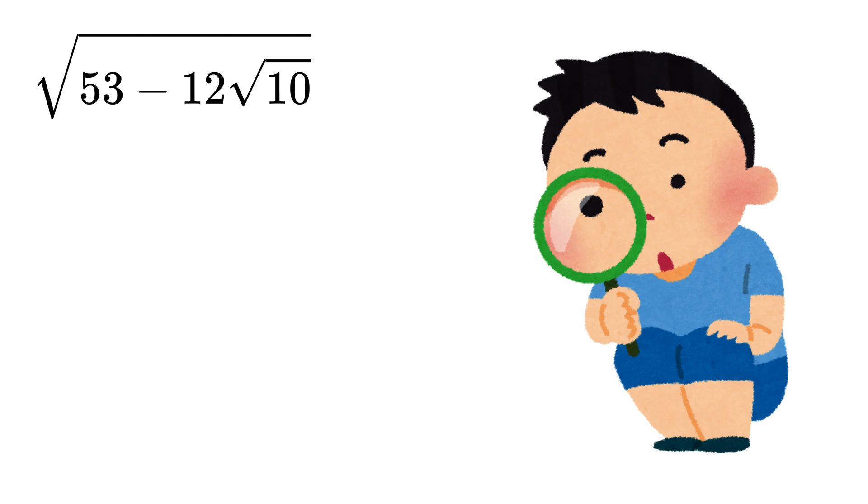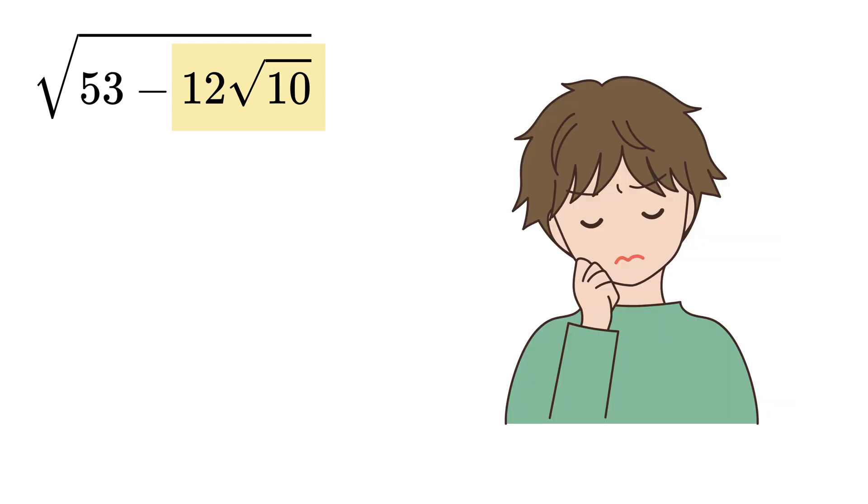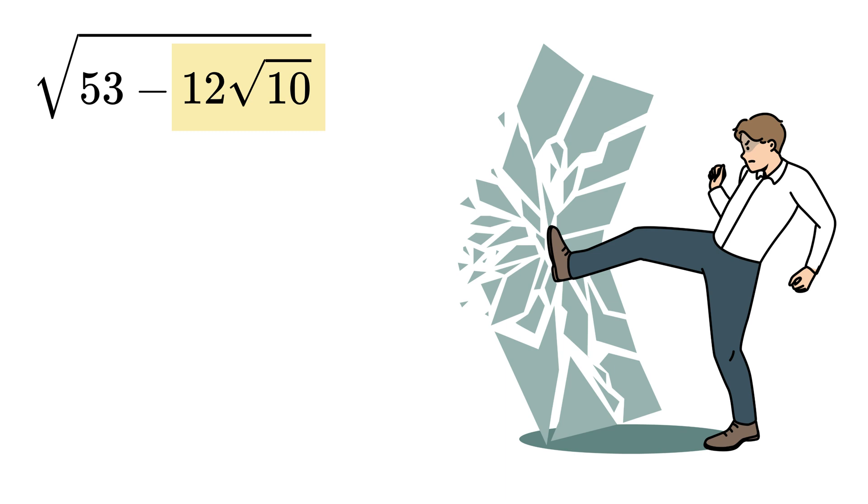We begin by focusing on the term involving the number multiplied with the square root, which in this case is 12 times the square root of 10. Instead of treating this as one solid block, we break it into simpler factors.